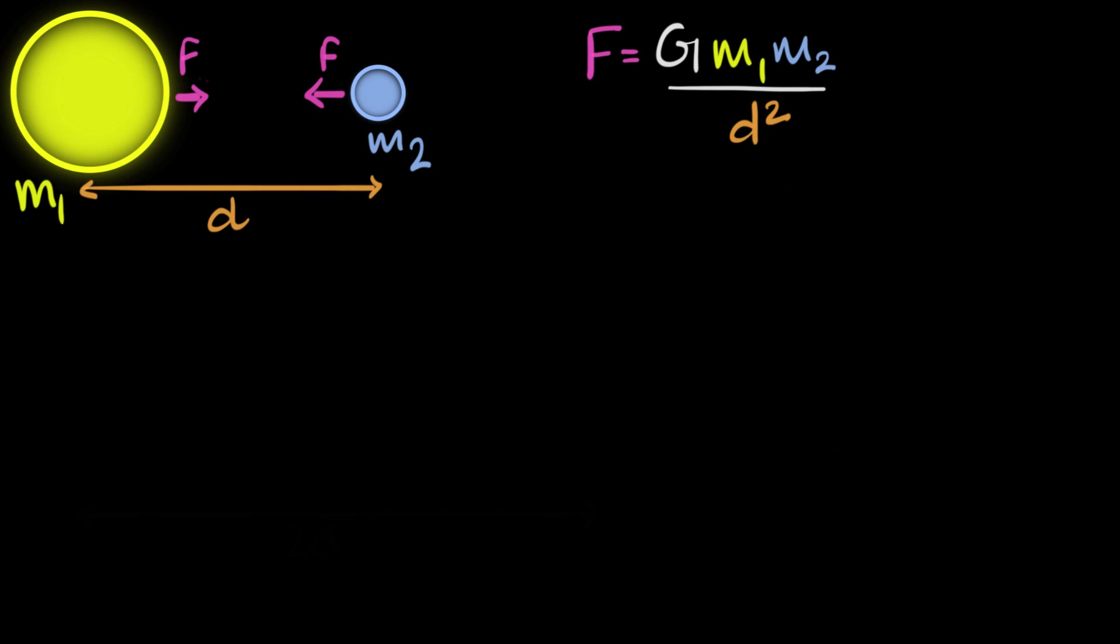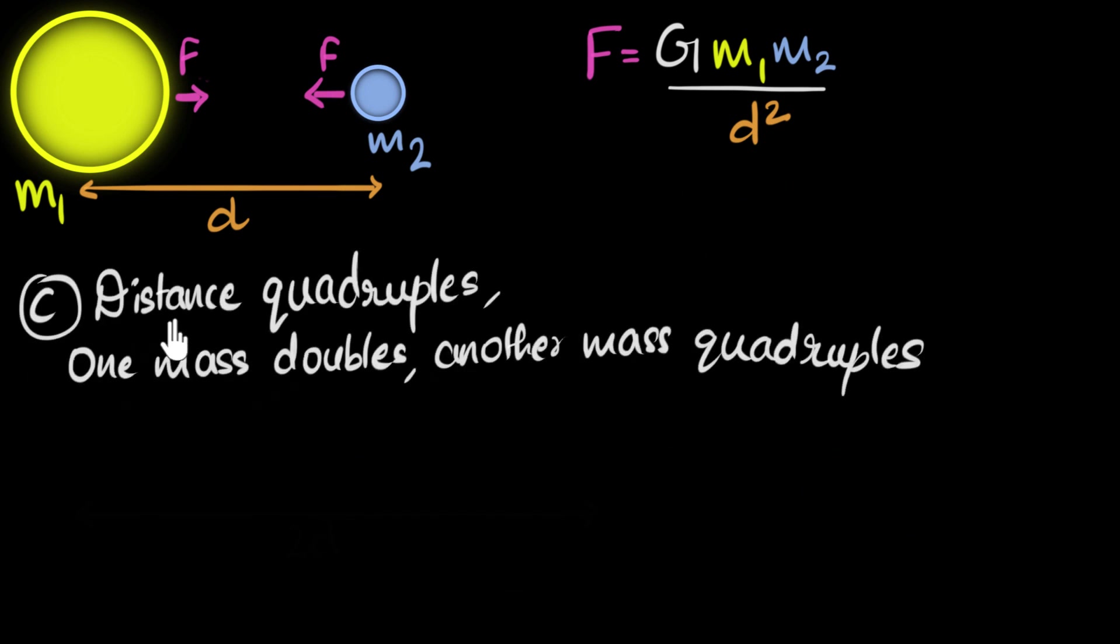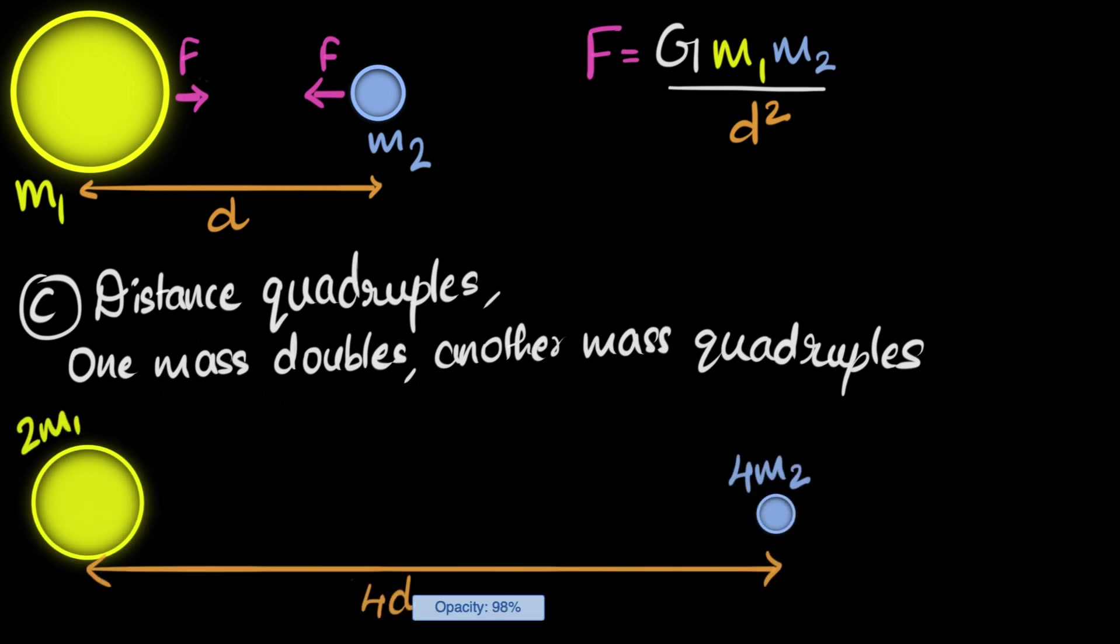One last, just for fun and practice. Here's the big one. The distance between them quadruples. One mass doubles. Another mass quadruples. Quadruple means becoming 4 times as much. Now, again, can you pause and see if you can try this whole thing yourself? Make a drawing and see what happens. All right, so here's what the drawing would look like. The distance between them has become now 4D because it has been quadrupled four times. Let's assume that the mass of the sun doubled and let's say that the mass of the earth quadrupled. It doesn't matter. Even if this was to become four times and this was to become two times, the answer would still remain the same.